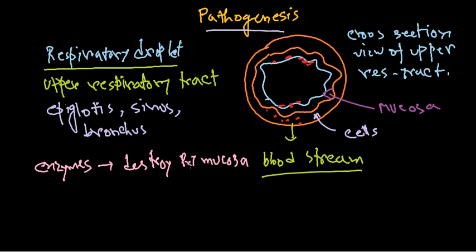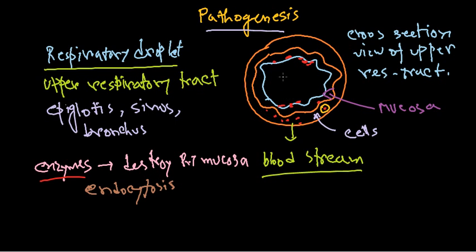After destroying the respiratory tract mucosa, the bacteria enter the host cell via receptor-mediated endocytosis. The bacteria adhere to the cell surface, vesicles form engulfing the bacteria, which then fuse. In most cases, the bacteria secrete enzymes that destroy the cellular degradation mechanism, allowing them to survive and spread via the bloodstream to other regions.